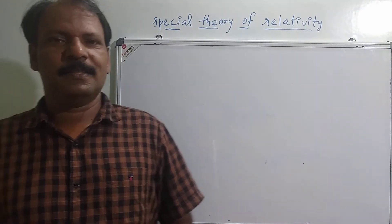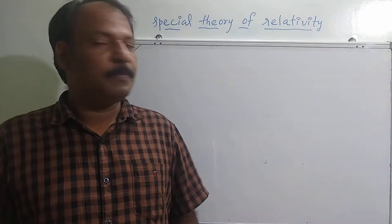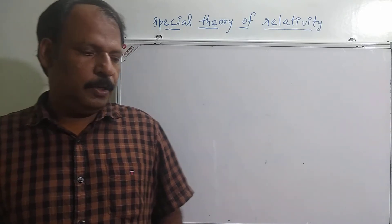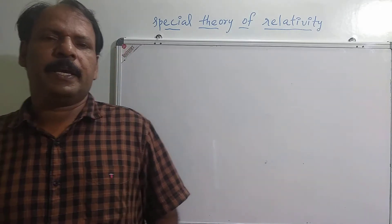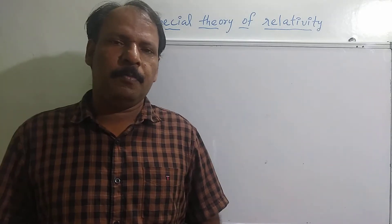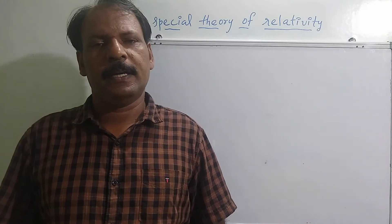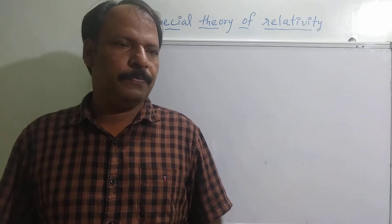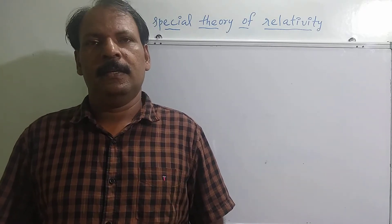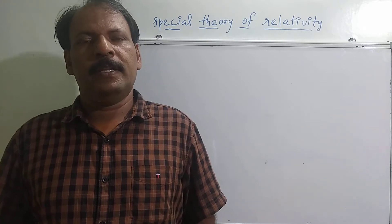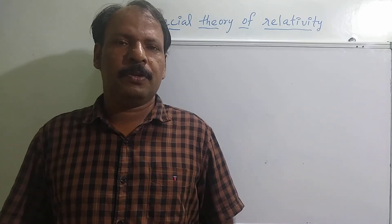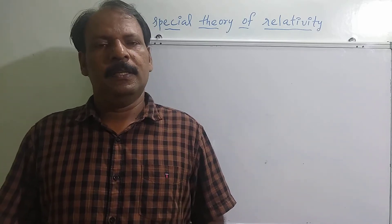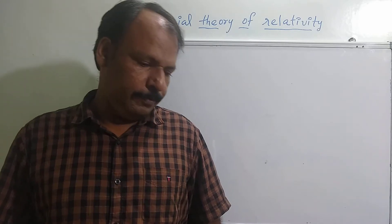Now we discuss the special theory of relativity. Newtonian mechanics is applicable only when the velocity of a particle is much less compared to the velocity of light. When the velocity approaches the velocity of light, we will be dealing with special theory of relativity.